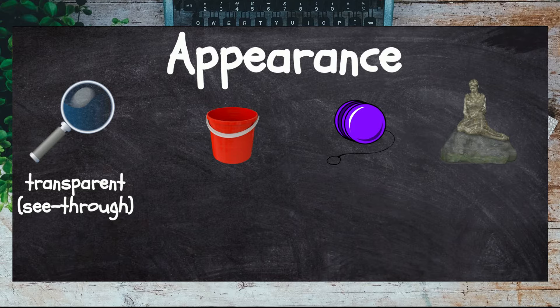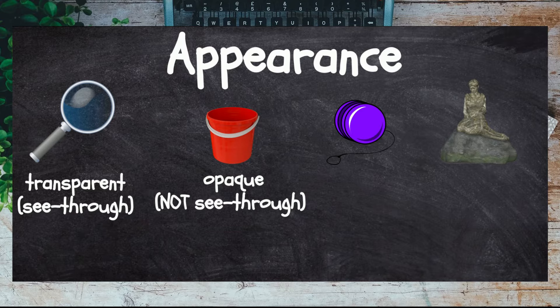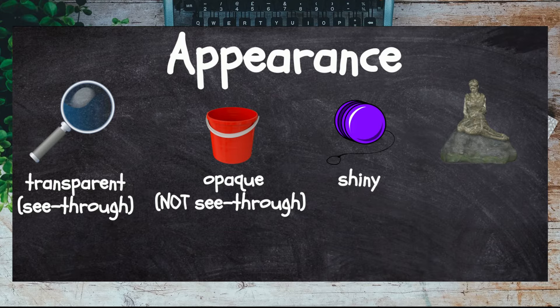If an object is opaque, it means it is not see-through, like this bucket. Shiny refers to the light reflection on an object, whereas dull means lacking brightness or sheen.